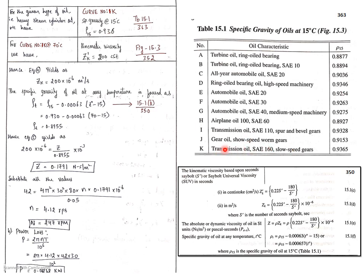With respect to the oil, you got the curve number K and rho 15. Now you need to get the value of ZK. Go to the graph, find curve number K at 70 degrees Celsius, check where the temperature line meets the curve, then go to the right-hand side Y-axis — you will get ZK dash as 200 centistokes. Hence, substitute ZK dash to get ZK as 200 into 10 raised to minus 6 meters squared per second.